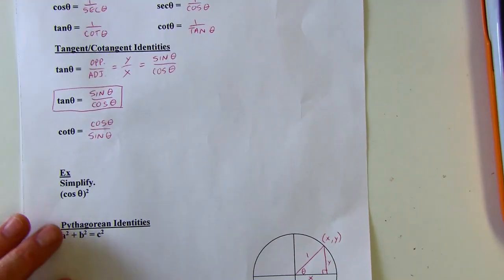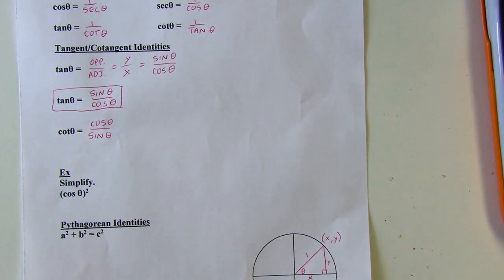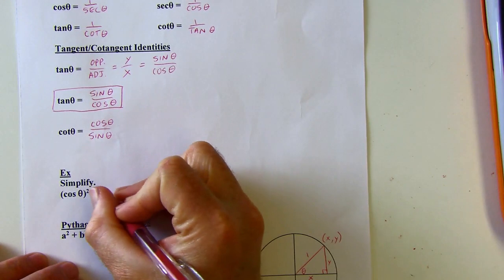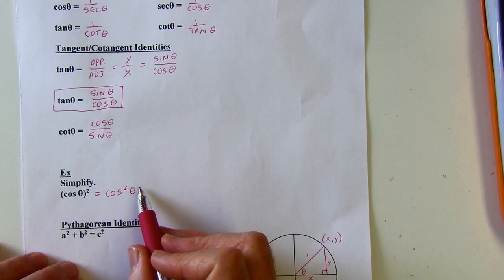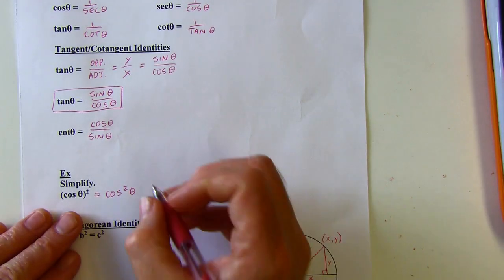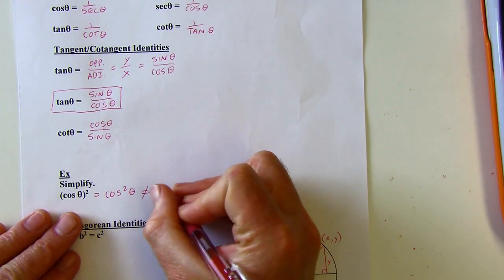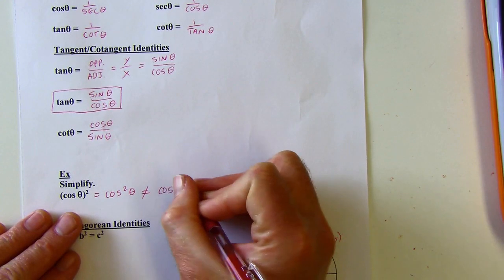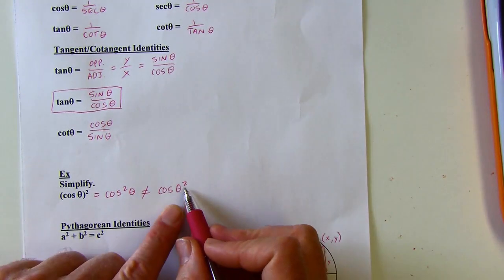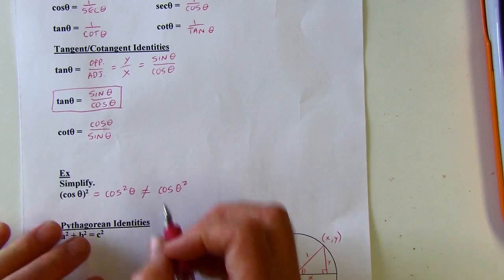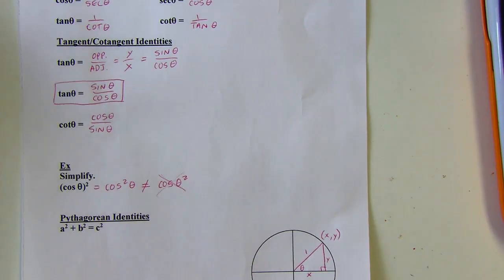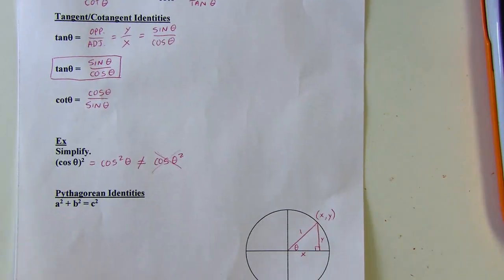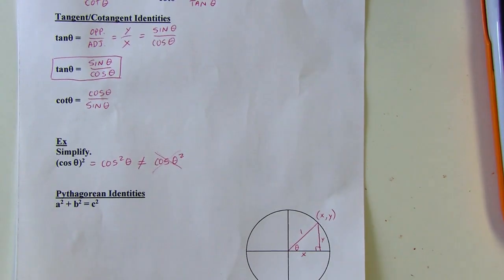Here's an important notation point: if I square cosine theta and rewrite it without parentheses, it's written as cosine squared theta — the square goes after 'cosine,' not at the end. This means cosine theta times cosine theta. This is not the same as cosine of theta squared, which would be squaring the contents of the cosine. These are equivalent and that distinction is going to become important for our Pythagorean identities.